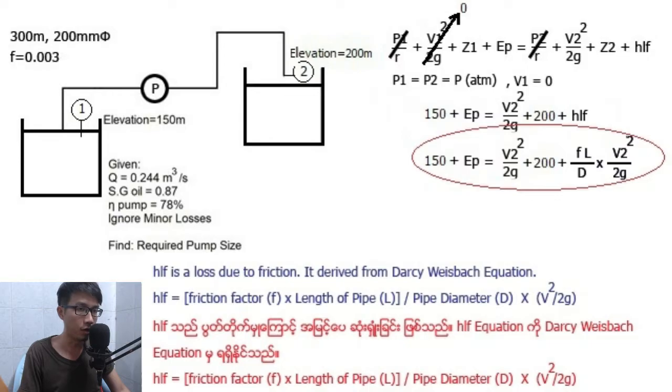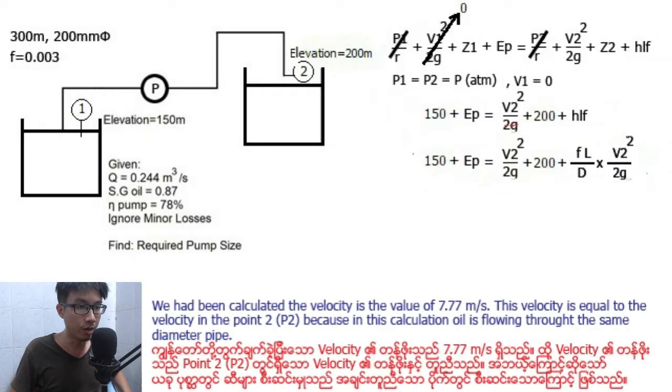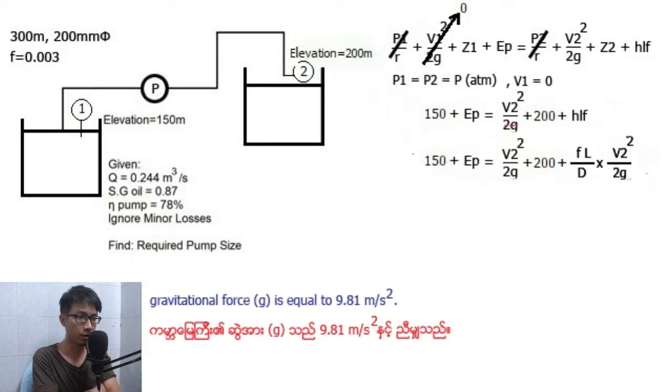It's derived from the Darcy-Weisbach equation. HLF equals friction factor f times length of pipe L divided by pipe diameter D times V squared over 2g. We have calculated that the velocity is 7.77 meters per second. This velocity is equal to the velocity at Point 2, V2, because in this calculation water is flowing through the same diameter pipe.